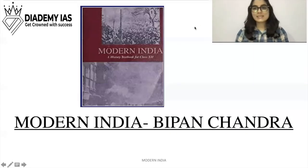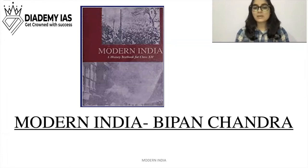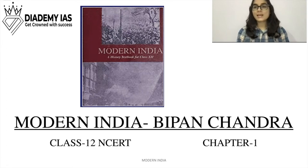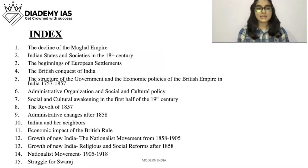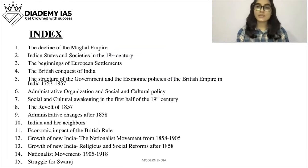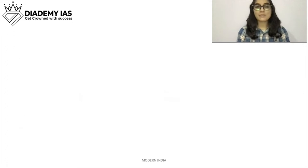Hello everyone, this class is presented to you by Diademy IES. In this class we will be covering Modern India by Bipin Chandra, class 12 NCERT chapter 1. So first of all let's have a look at the index of this book — in total there are 15 chapters and today we will be starting off with chapter 1: the decline of the Mughal Empire.